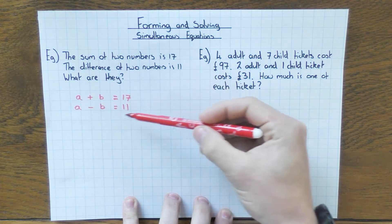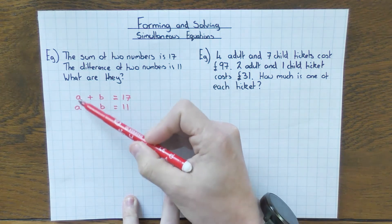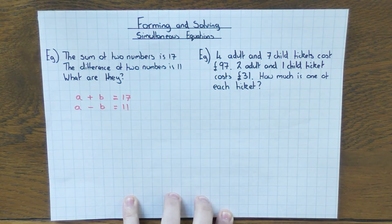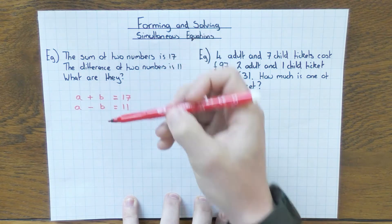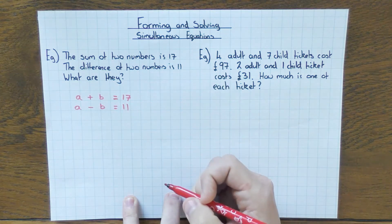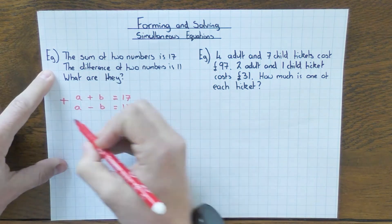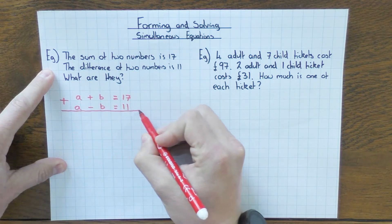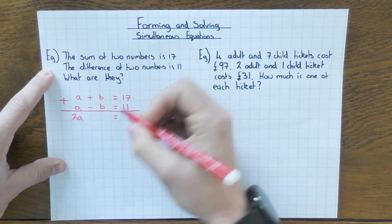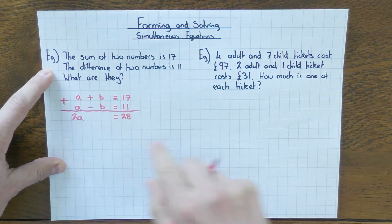We need to eliminate one of the variables. I always go for B here, but you could eliminate either A or B. We need to make sure they're the same — in this case they are, B and B. I've got plus B and minus B, so if I add these two equations I'm going to eliminate B. B plus minus B is nothing. So I add the two equations: A plus A is 2A, B plus minus B is nothing, and 17 plus 11 is 28. So I'm left with 2A equals 28.